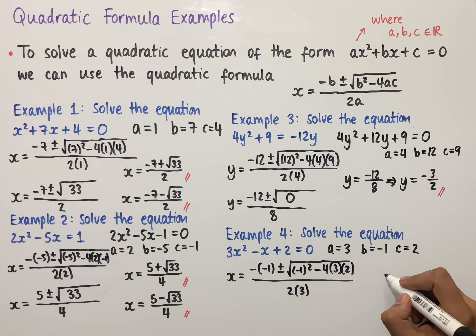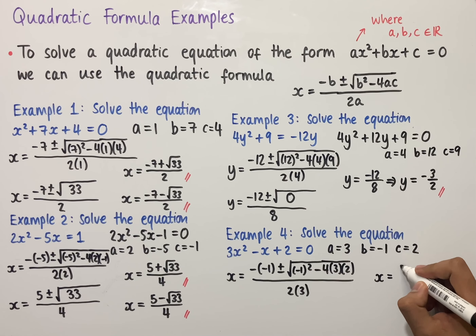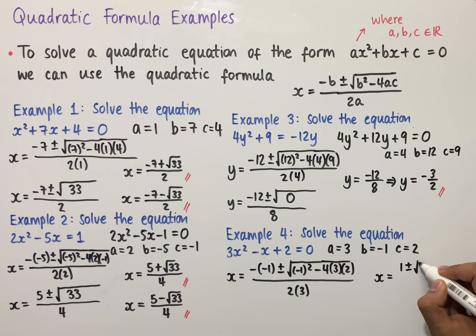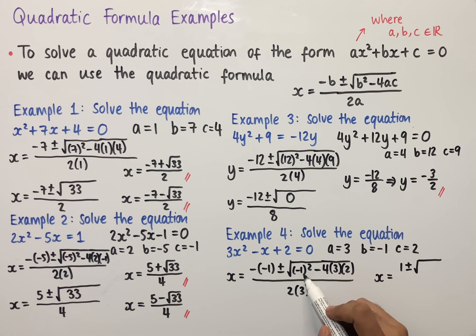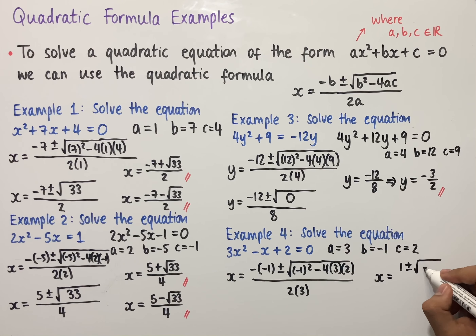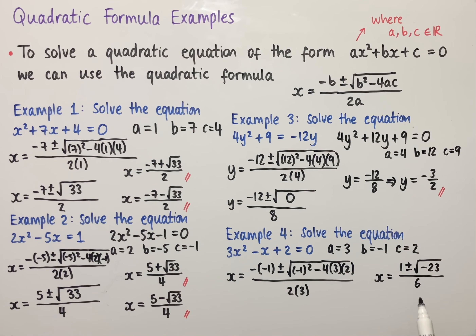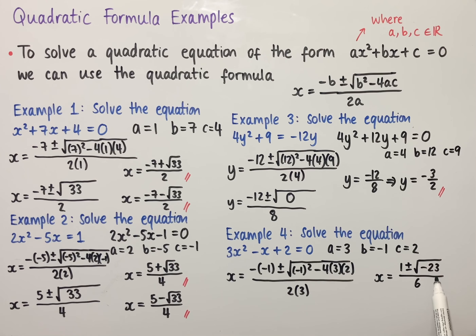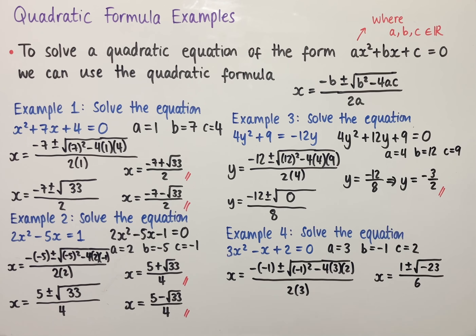Substituting into the quadratic formula, we have x equals minus b, so that's minus minus 1, plus or minus the square root of b², so that's minus 1 all squared, minus 4 times 3 times 2, all over 2a, which is 2 times 3. Simplifying, minus minus 1 gives plus 1, and inside the square root: minus 1 all squared is 1, minus 4 times 3 is 12, times 2 is 24. So 1 minus 24 gives minus 23, all over 6.